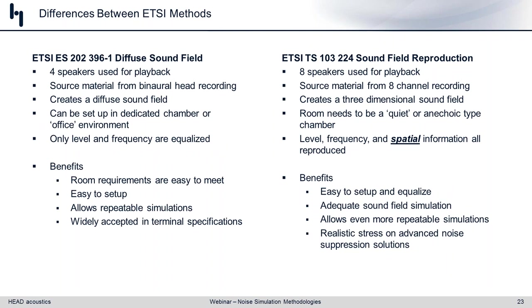A quick side-by-side: ES202396-1, which uses four speakers plus a sub, has been around for a long time, is embedded in a lot of standards, is still a good standard, but has limitations primarily with frequency ranges not being as high as desired and no phase information included in the playback. On the other side, TS103224 uses eight mics and eight speakers, we do get spatial information and can equalize to 20 kHz — it's more modern and appropriate for today's environments — but the phase information cuts off at 3 kHz and we can't fit large products within the size of the array.